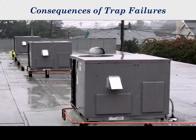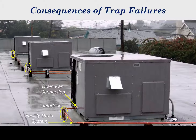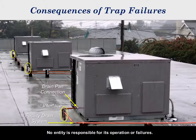Why trap drain systems that allow property damage and health threats are so widely used and unchallenged is explainable. The condensate drain system is a unique component in the total system — an interface between the drain pan connection and the facility drain system, for which no entity accepts responsibility for its operation or failures. Hence, there is little interest in improving drain system performance. The building owners and managers are the victims, while others stand to gain in the form of more service calls and higher than necessary equipment replacement rates.